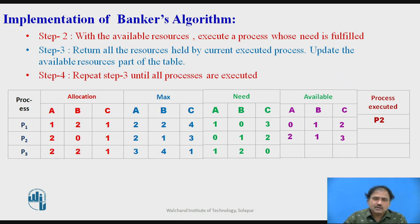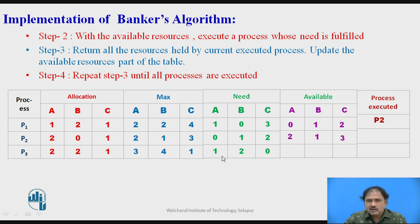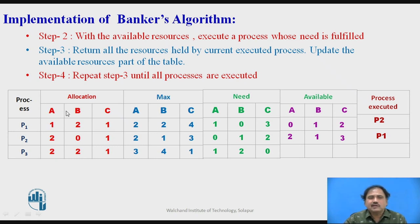Again with the updated available resources, we check which process can execute next. P1 requires 1, 0, 3 — which matches what is available. P3 requires 1, 2, 0 but P3 needs 2 instances of B which we don't have. So we execute P1. When P1 executes, it returns all resources back to the OS, making available resources 3, 1, 4 — and with these we can execute P3 successfully.